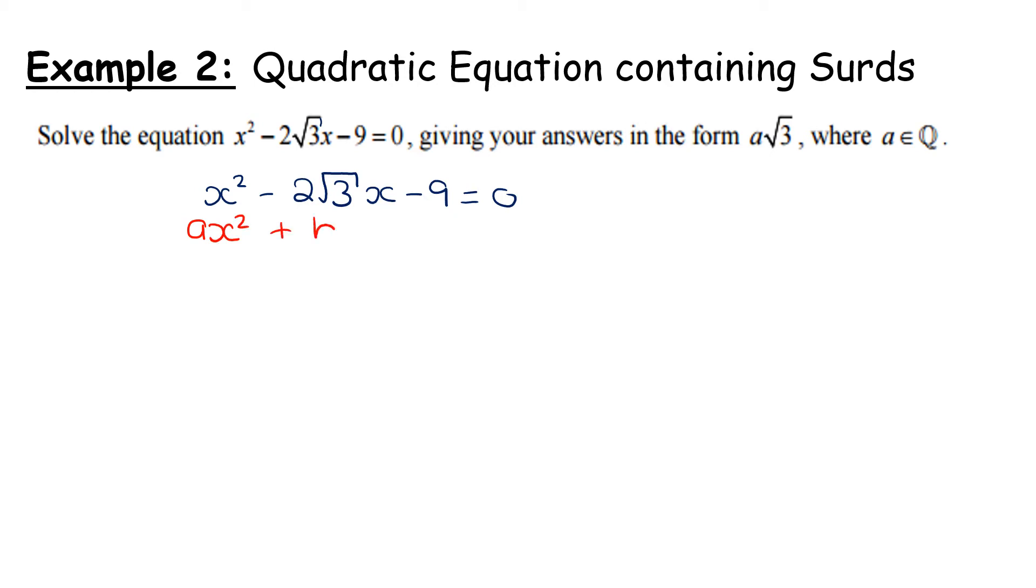So that's ax² + bx + c = 0. Our a is 1, our b is -2√3, and our c is -9. So then we have x = -b, so -(-2√3) ± √(b² - 4ac) all over 2a.